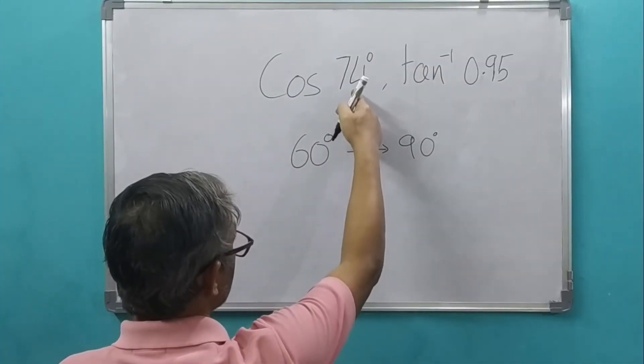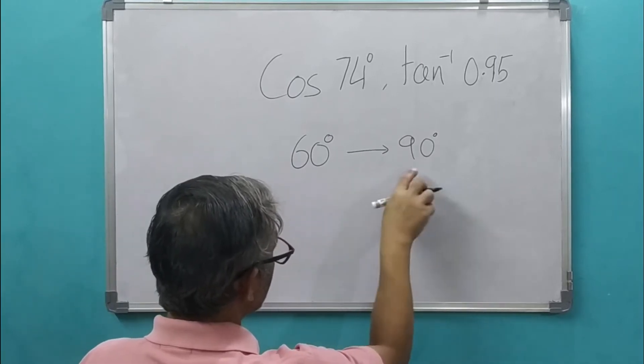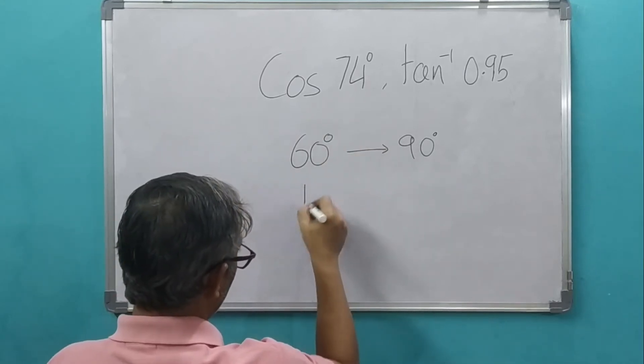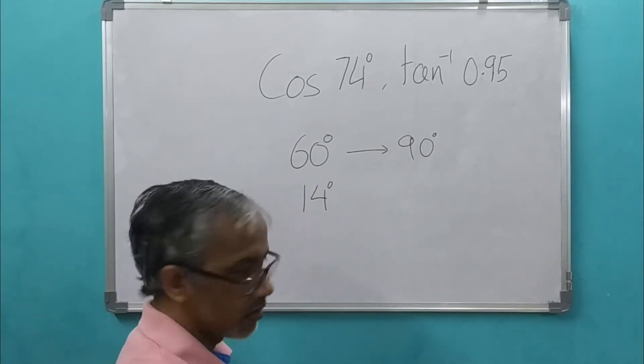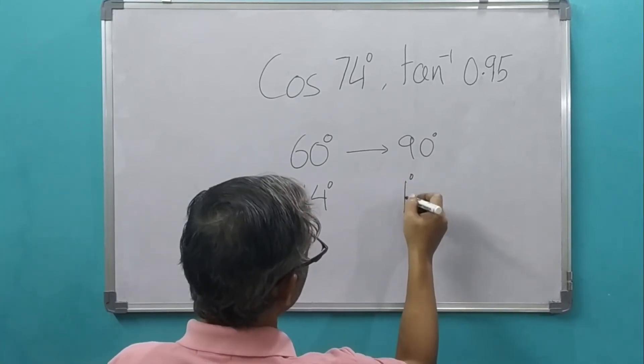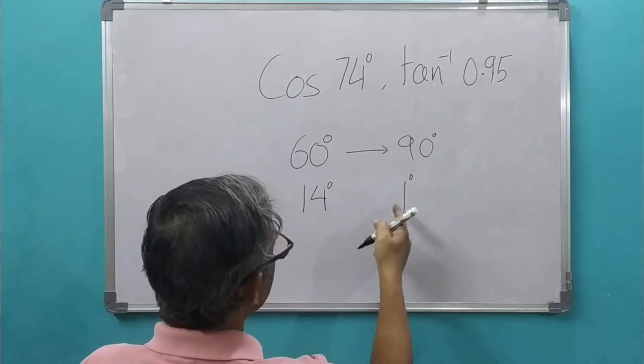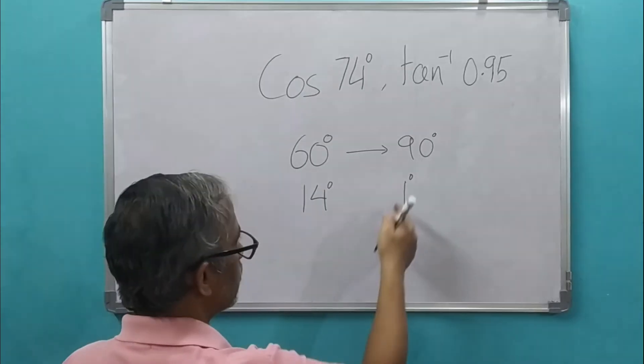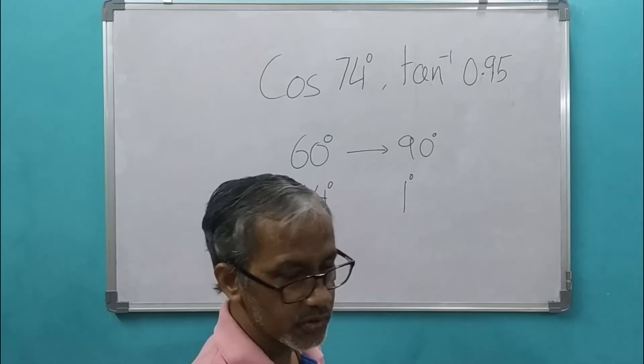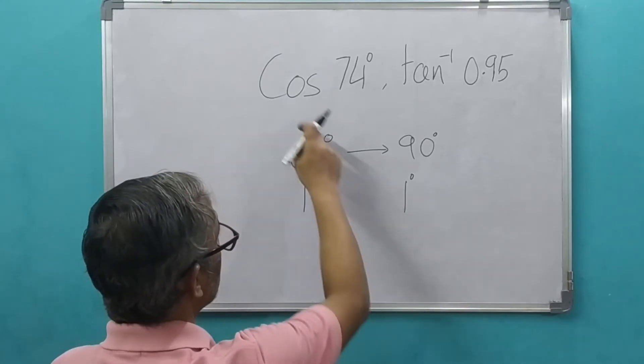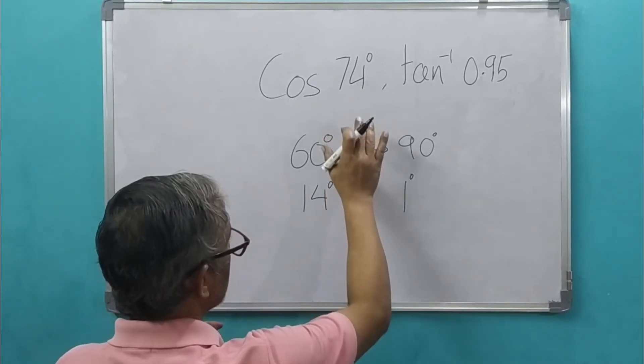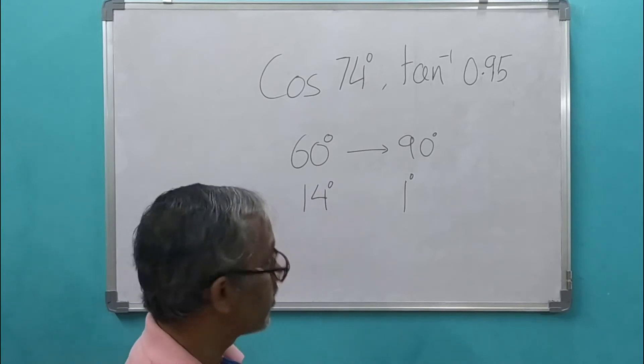So let's first go for cos of 74 degrees. You can see that this angle 74 degrees lies between 60 degrees and 90 degrees and the difference between the 74 degrees and 60 degrees is 14 degrees. We cannot use this difference of 1 degree in case of this 14 degrees. That would be a very long process. Where do we find a value of this cos function which is near to this 74 degrees and from that we can calculate the value?